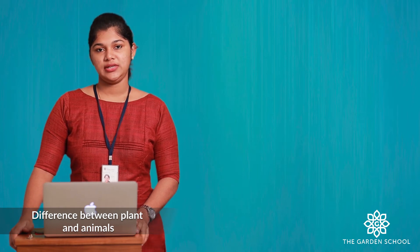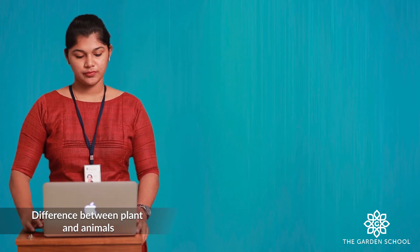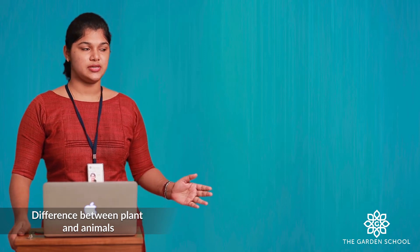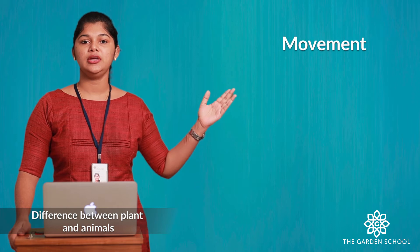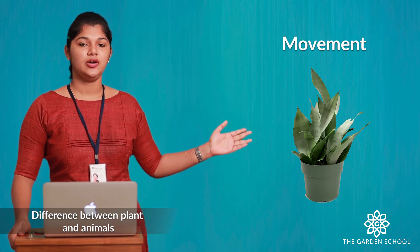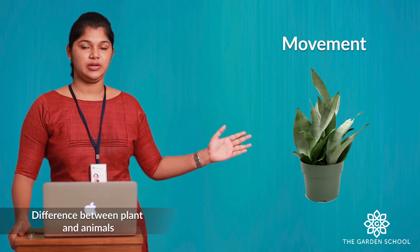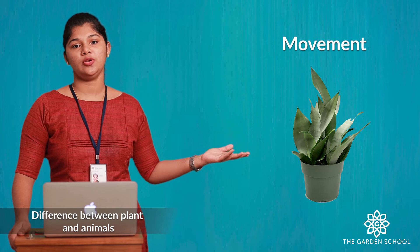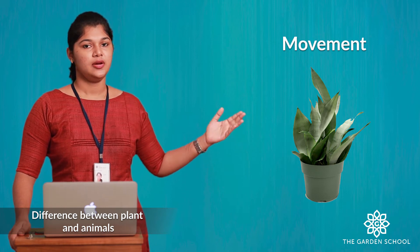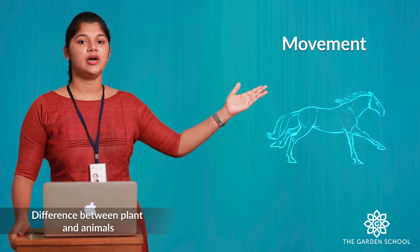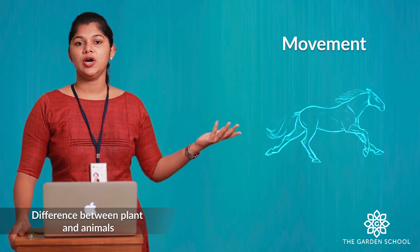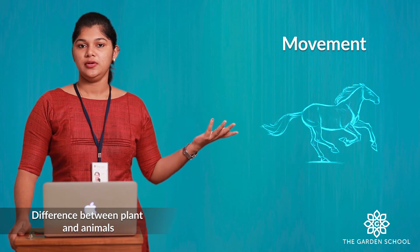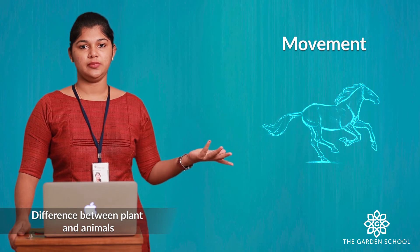Now let's see this. The first difference between the plants and animals is movement. Here you can see the plant — it is planted in one place, so it cannot move from place to place. But you can see the other picture, that is the animal, which can move freely without the help of any other humans or any other animals.